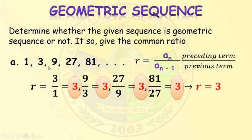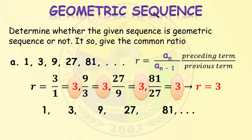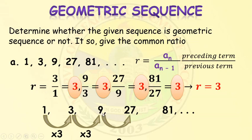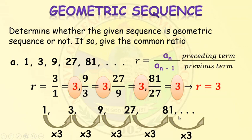Since we have a consistent common ratio of 3, the sequence 1, 3, 9, 27, 81 is a geometric sequence. To extend the sequence, we multiply each term by 3: 1 times 3 is 3, 3 times 3 is 9, 9 times 3 is 27, 27 times 3 is 81, and 81 times 3 gives us the next term, which is 243.